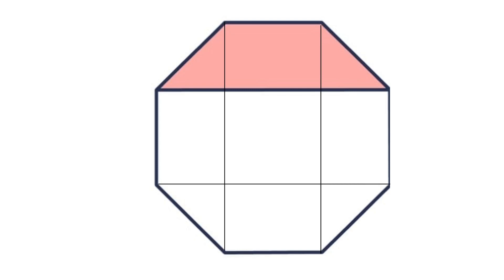Then let's take a look at the top trapezium. There is a rectangle there. That rectangle is congruent, in other words exactly the same, as the other ones as you see here.